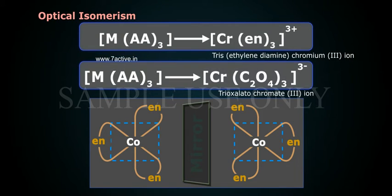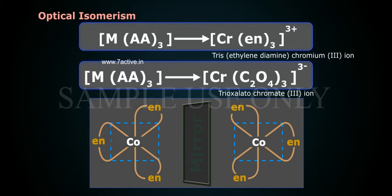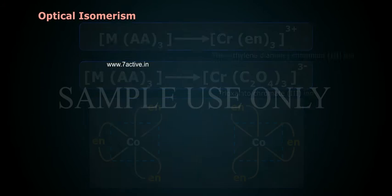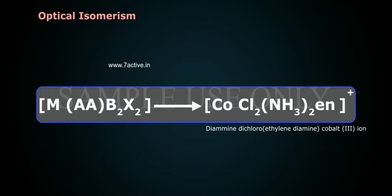For the MAA3 type, examples include tris(ethylenediamine)chromium(III) ion, trioxalatochromate(III) ion, and diaminedichloro(ethylenediamine)cobalt(III) ion.